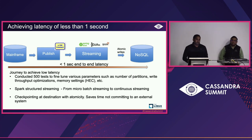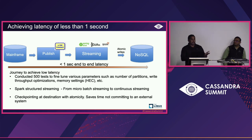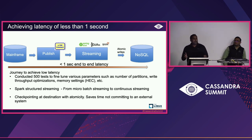The three problems Seshi mentioned — latency, data loss, and reconciliation. Without achieving sub-one-second latency, this project doesn't exist. We did extensive performance tests — over 500 runs today. Starting with the mainframe: we tuned the number of threads listening to events, added more listeners and more partitions in Kafka terms. That reduced mainframe-side latency to under 500 milliseconds. When mainframe publishes to the streaming engine via a Spring Boot REST API gateway, mainframe just calls an endpoint — everything behind the scenes is abstracted.